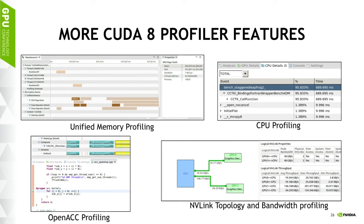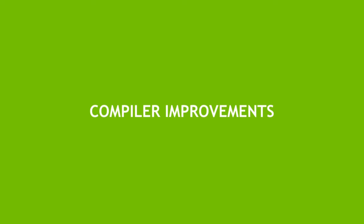The fourth piece is the ability to profile NVLink behavior. With Tesla P100, we're introducing NVLink. With the Visual Profiler, you'll be able to visualize the NVLink topology within your system — here showing two GPUs connected to the CPU — and measure the achieved bandwidth on the links between processors, so you can see whether you're getting good utilization of NVLink and think about how to optimize it.